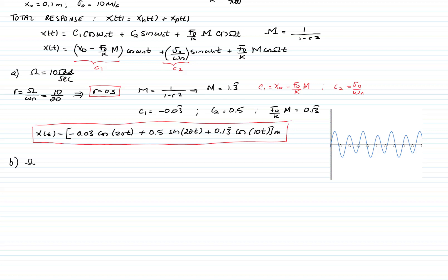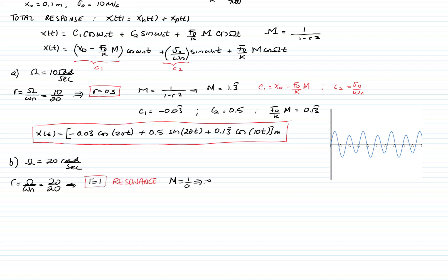For the second case, the forcing frequency is ω = 20 radians per second. The frequency ratio r = 20/20 = 1, so we are at resonance. The amplification factor, 1/(1 − r²), becomes 1/0, which is infinity.